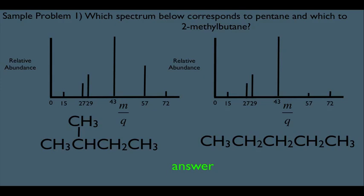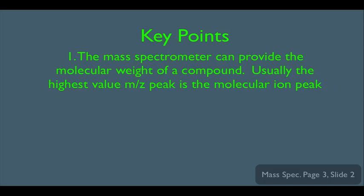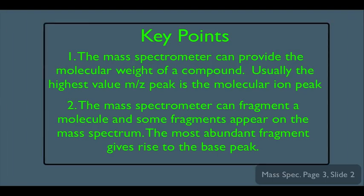So this is one type of question you can encounter on an exam. Key points: number one, the mass spectrum provides the molecular weight of a compound — the highest value m/z peak, the heaviest peak, is the molecular ion peak, most likely due to the molecule in its most intact form. Number two, the mass spectrometer can fragment a molecule, and some fragments appear on the mass spectrum. The most abundant fragment gives rise to the tallest peak — the base peak — which is usually due to the most stable fragment.